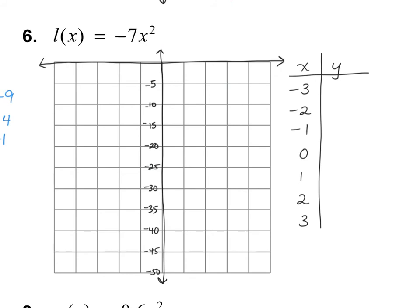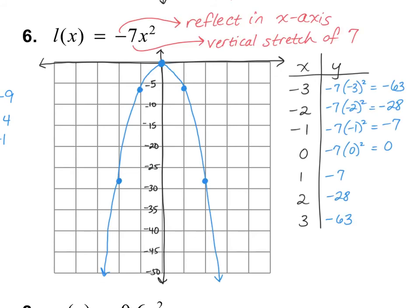Please pause the video and try number 6 on your own, then check your work. Notice that I didn't have room for the third points at 3 and negative 3, both giving negative 63 — and that's okay. The negative out front means a reflection in the x-axis, and the 7 means a vertical stretch of 7.